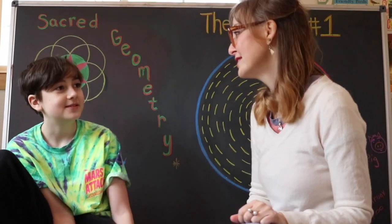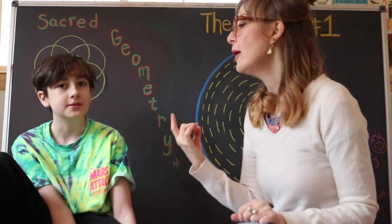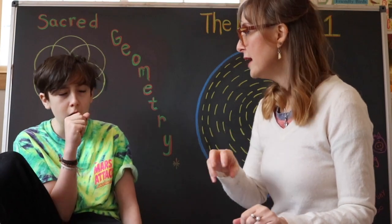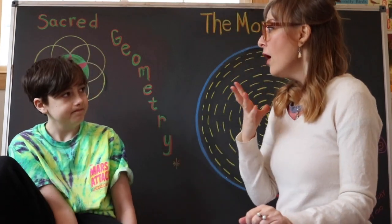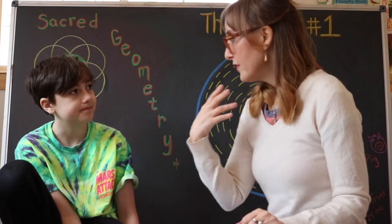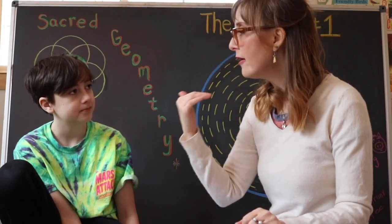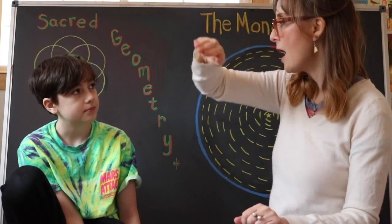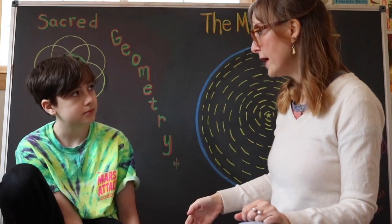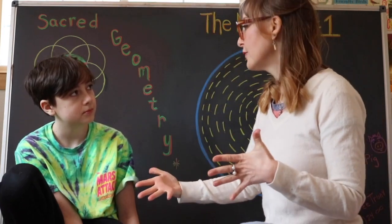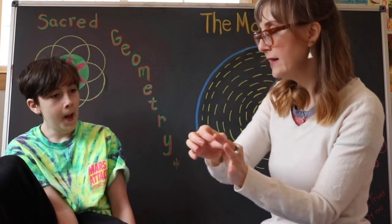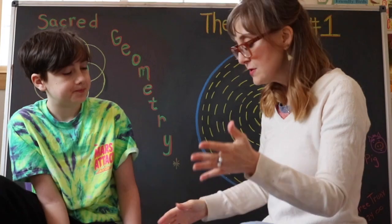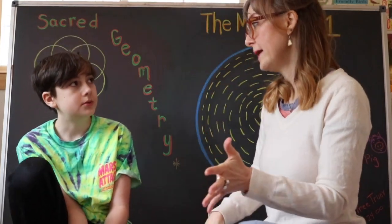Think about breathing. In the cycle there's the in-breath and the out-breath. Every cycle, in a sense, has two parts — it goes up and then comes down. Like in the seed cycle, it goes from seed to blossom, then back down to seed. So every cycle kind of has an up and a down.